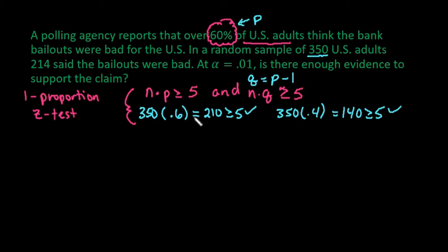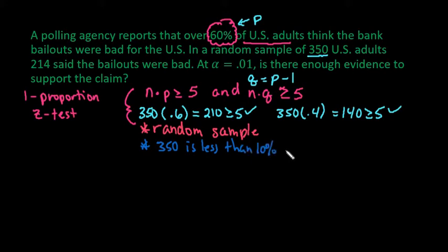Some other conditions, like from the current textbook that I teach from, the only thing that needs to be done is this one and that it has to be a random sample. From other textbooks, you do have to sample less than 10% of the population. So if that's part of your requirements, make sure that you include this. 350 is definitely less than 10% of all U.S. adults, so we're okay to use the one-proportion Z test.